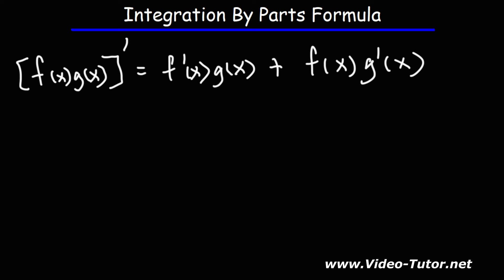Now, in order to get the integration by parts formula, we need to integrate this expression. So let's put an integral symbol for each of these. On the left, if you have a derivative and integration, these two will negate each other, so you're just going to get f times g.